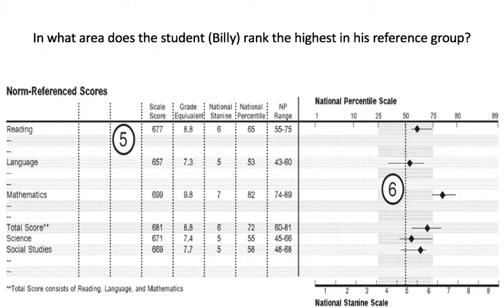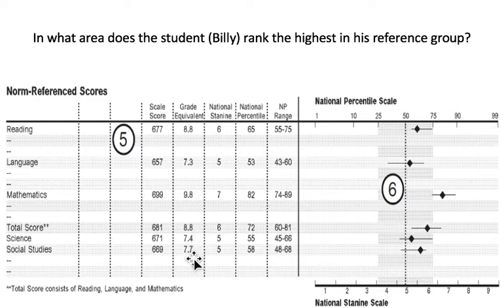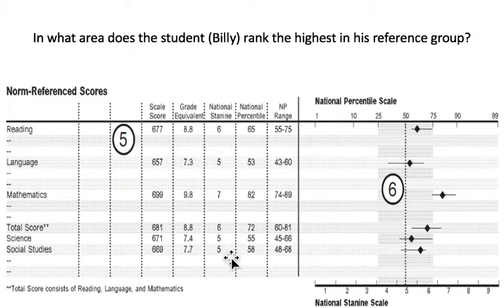I might ask something like: in what area does this student, Billy, rank the highest in his reference group? You can look at a lot of different things. You could look at scaled scores, but you would be wrong to do that because, as we talked about, these numbers vary a lot by different content areas. You could go by grade equivalent, but in this case you are comparing them to multiple reference groups, not just their current grade level. So you shouldn't go by this one, because it also matters what kids above and below him in other grades did. You could go by the national stanine, but in some cases you get the same answer.